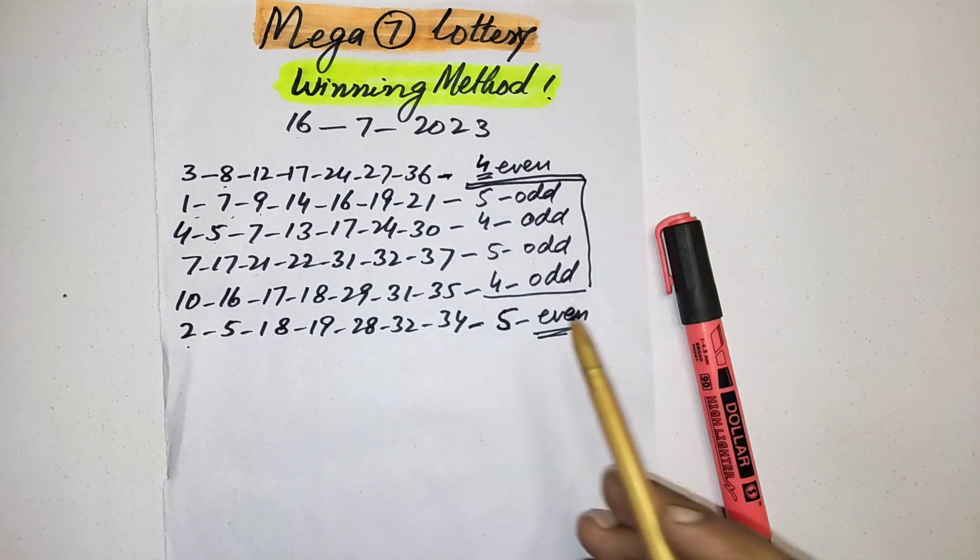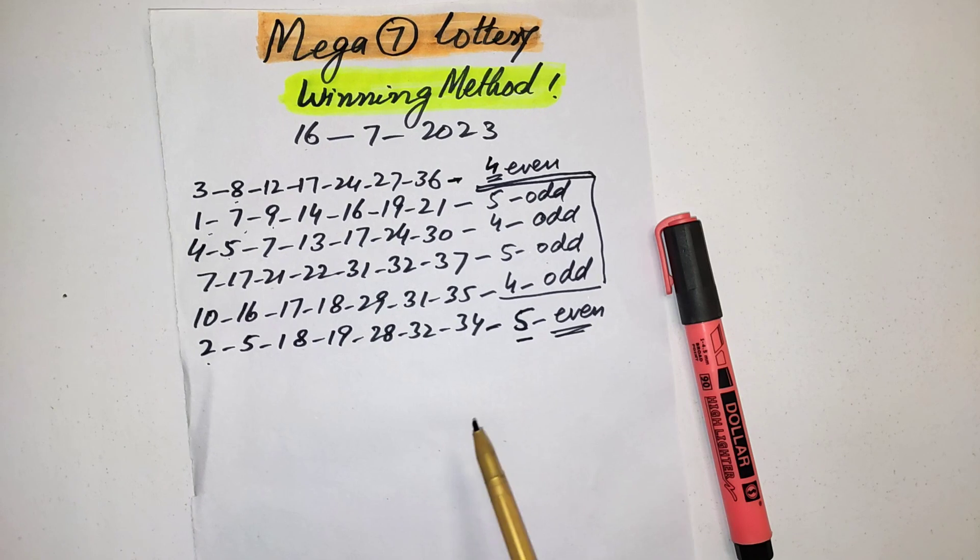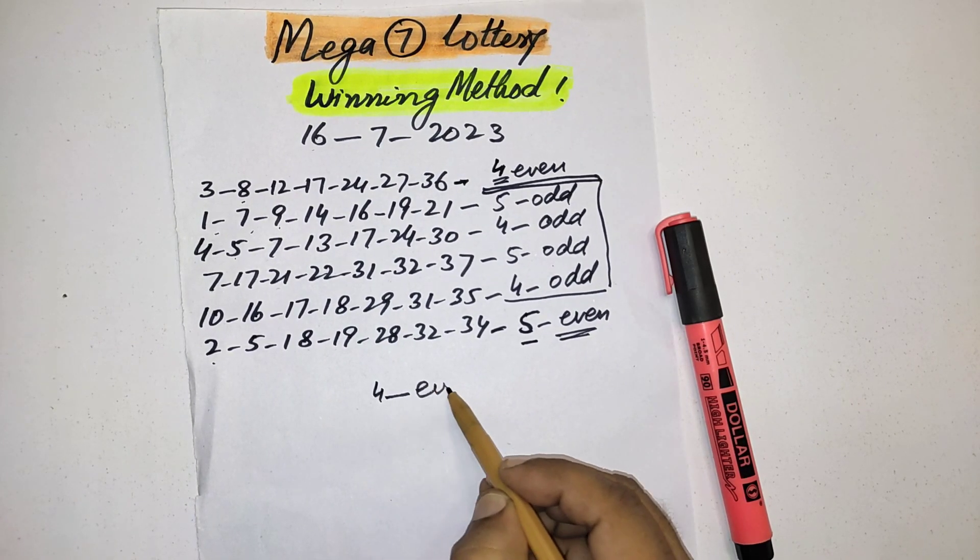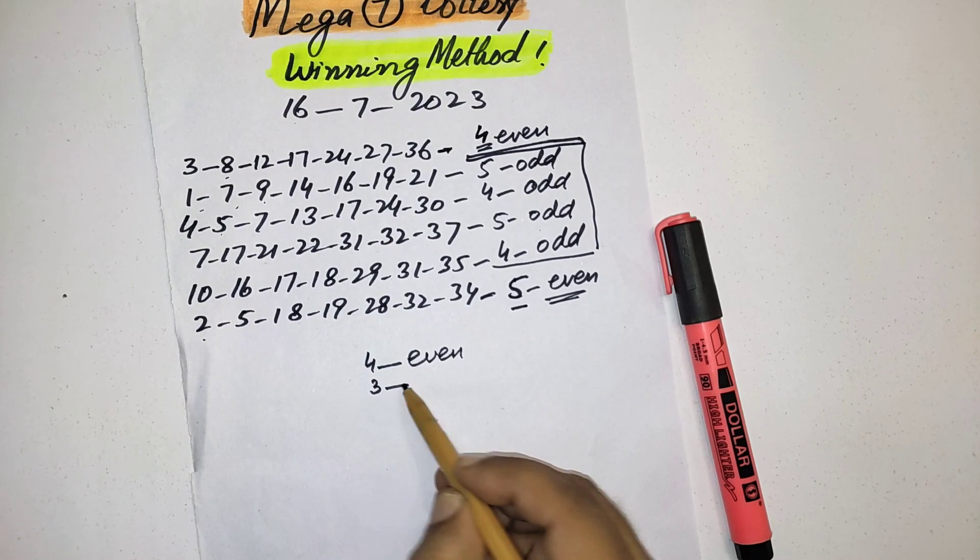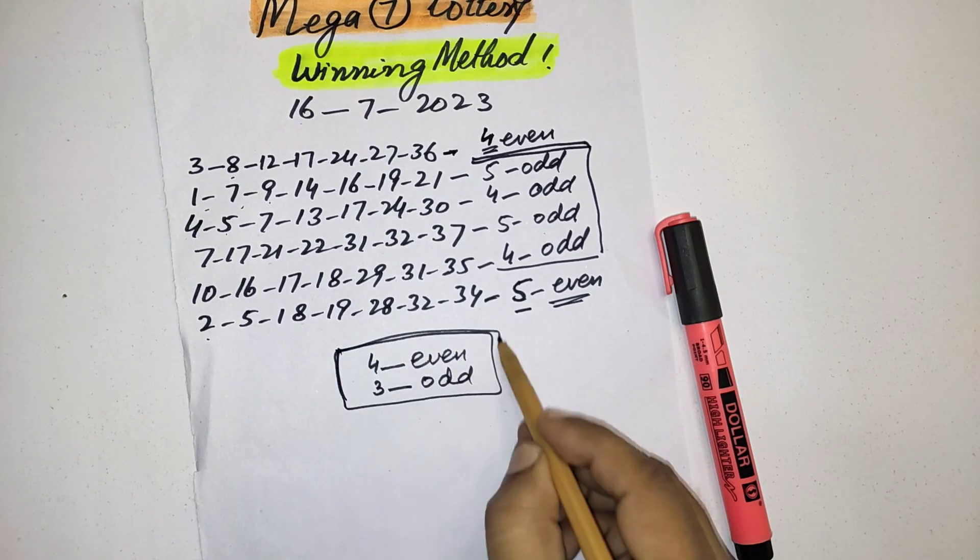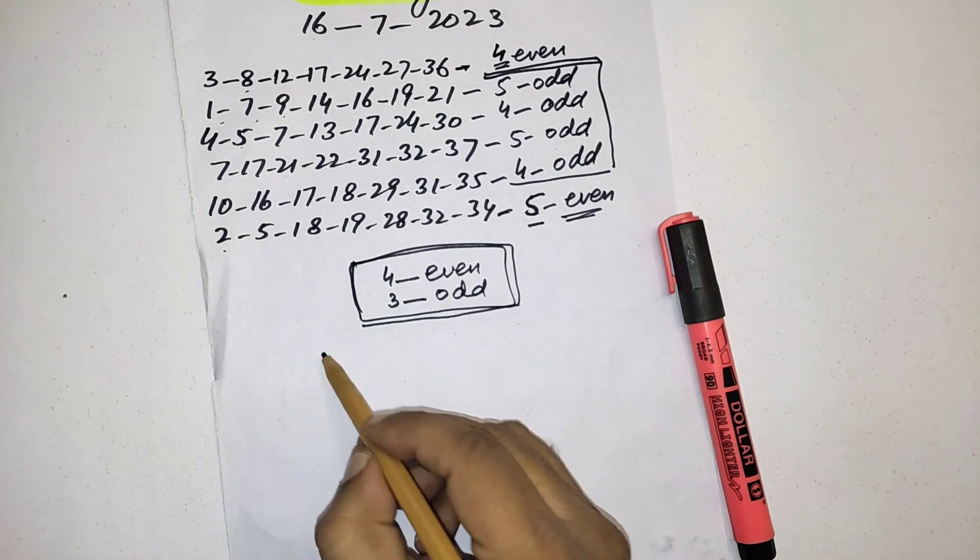Now they will pick four numbers in even and three numbers in odd. This is a powerful combination for this draw. I have also powerful numbers in even and odd.